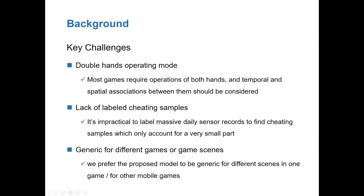There are three key challenges for this task. First, mobile games require both hands to work together to complete operations, so the temporal and spatial associations between operations of both hands should be considered. Second, since cheating samples only account for a very small part of the massive daily data, it is impractical to obtain adequate and comprehensive cheating samples through manual labeling. Third, a game company always operates many games, and each game may have multiple scenes or modes. Thus, we prefer the model to be generic for different games or different scenes.